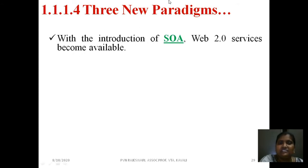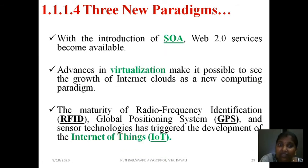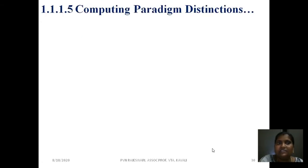Along with all this evolution, we got three new paradigms which help us communicate, store, and process data anywhere in the world. First is service-oriented architecture (SOA). Second is virtualization. Third is the internet of things, made possible through RFID — Radio Frequency Identification — and GPS, the Global Positioning System.